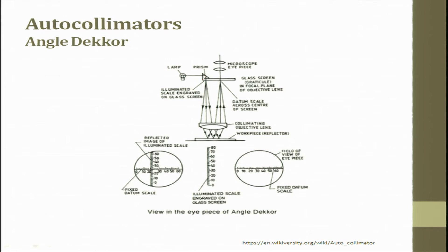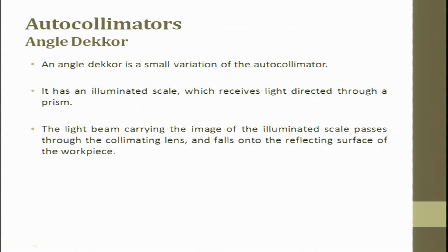The angle decker has illumination engraved on a glass screen, in both the x and y directions. You can see the reflected image of the illuminated scale, and there is a fixed datum. The difference between the angle decker and the autocollimator is that a prism is used here. The light beam carrying the image of the illuminated scale passes through the collimating lens, falls onto the reflecting surface of the workpiece, and passes through a prism.